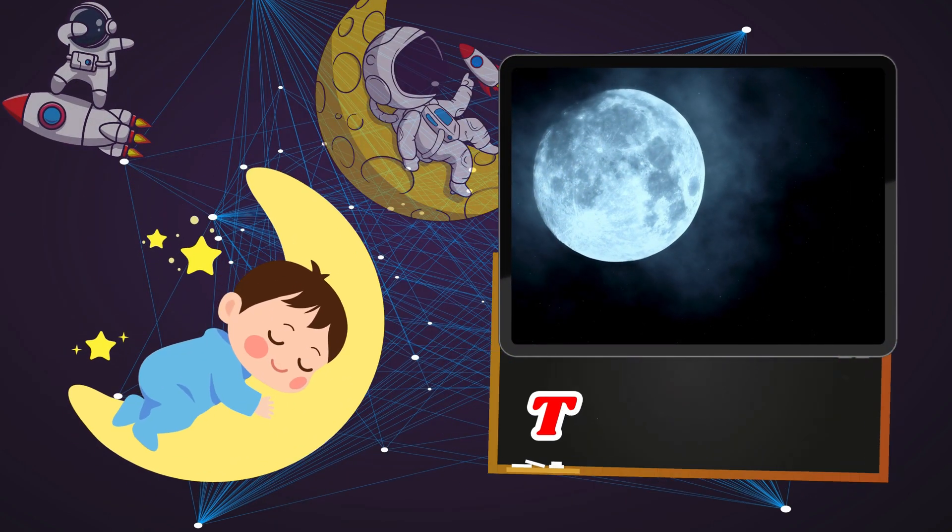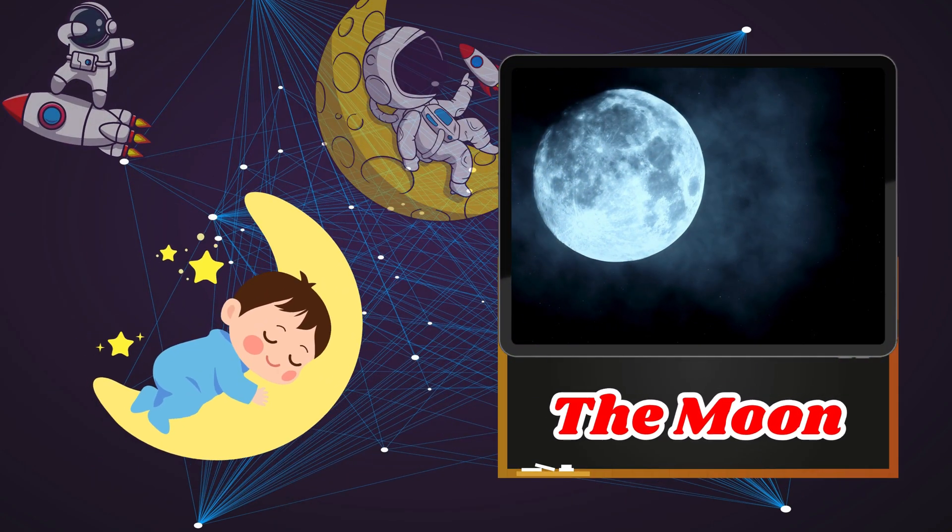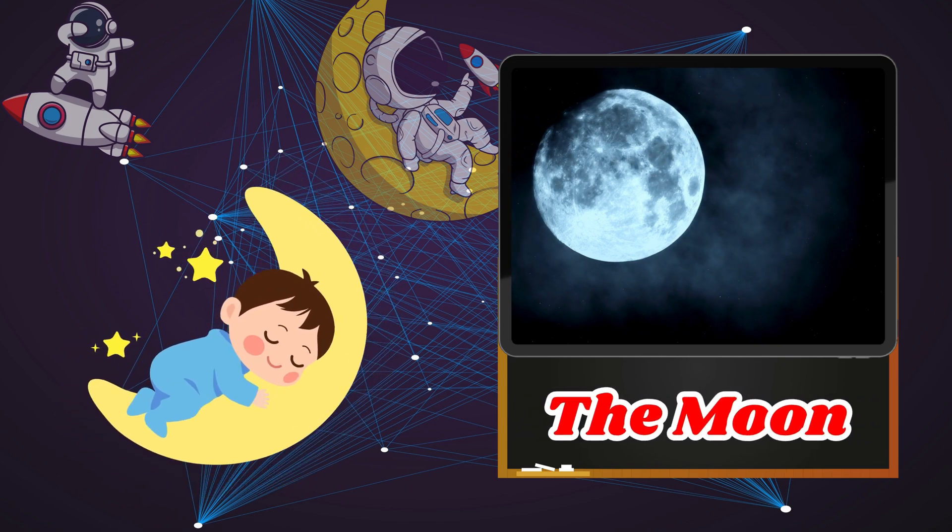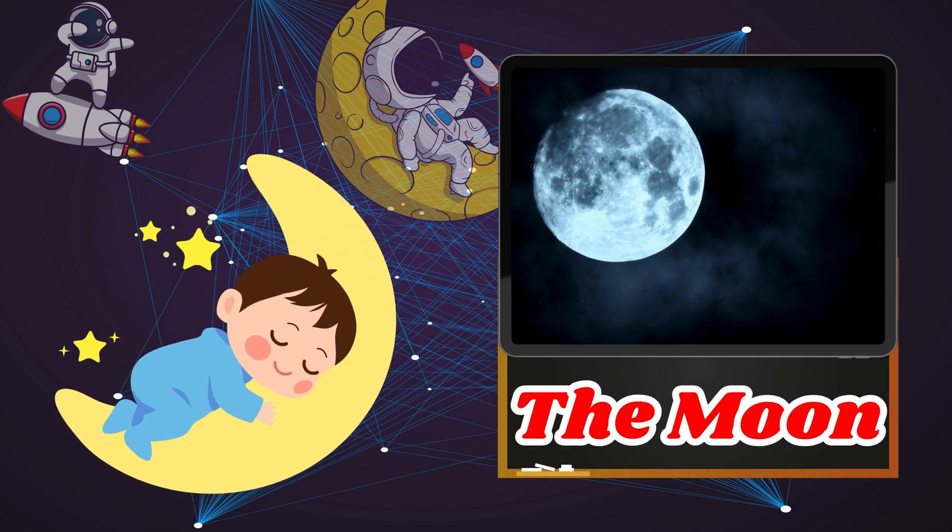The Moon is a big rock that goes around the Earth. It makes the night sky brighter and causes ocean tides.